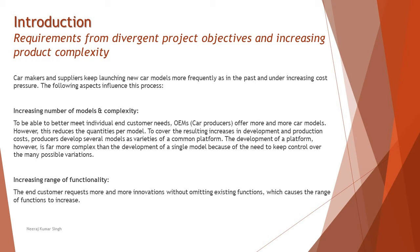Development of a platform is far more complex than the development of a single model because of the need to keep control over the many possible variations — which is exactly what we were discussing regarding independent user expectations. You can create different models with different variants of the same company, with a number of features differently deployed in different variants because people have different expectations. We try to increase as many features as possible but limit the quantity of each variant. So though we have different models, each model has different variants — you might have sunroof options, automated sensors, AI concepts, and all of these must be met from time to time.